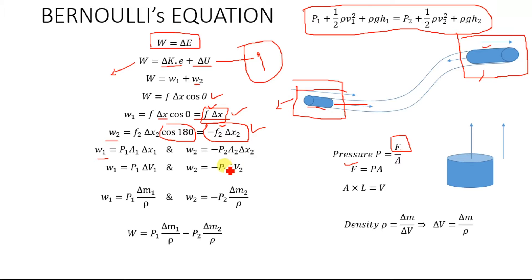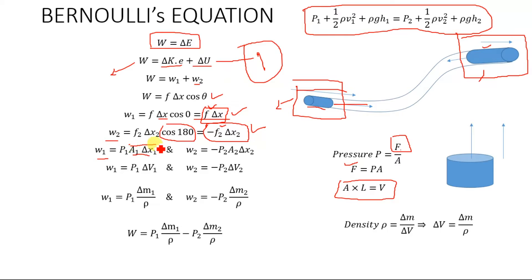Area multiplied by displacement (length) gives volume, since volume equals area times length. So we can express the equations in terms of volume: W1 equals P1·ΔV1 and W2 equals minus P2·ΔV2.